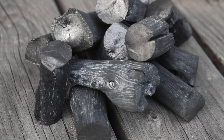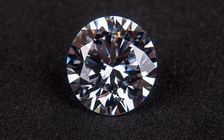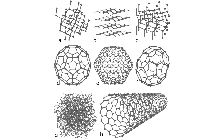On one end there are things like charcoal which are relatively soft, brittle, and burn easily. On the other end there are things like diamond which are extremely hard and will only burn if superheated in pure oxygen. But in between those two are materials that become more and more interesting as we learn more about them.